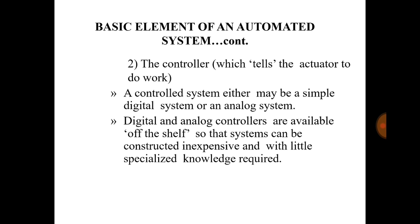Suppose you want to move the table 10 mm along the X axis. Then in your program you mention G00 X10. This instruction will be read by the controller, and then voltage will be given to the motor mounted on the X axis. Through that, the rotary motion of the motor is converted into linear motion with the help of a lead screw arrangement, and you get 10 mm of movement along the X axis. That is the role of the controller.